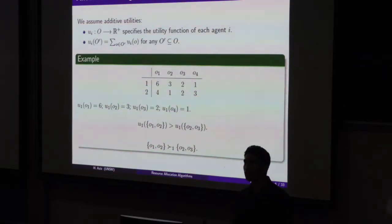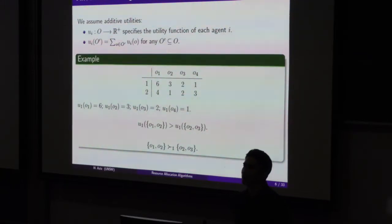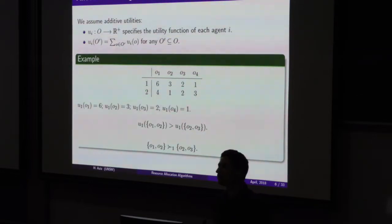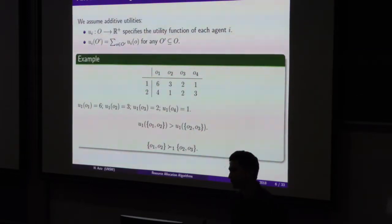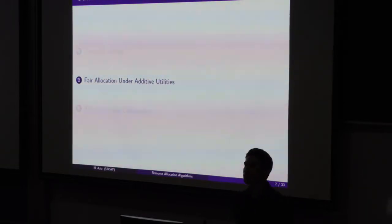All agents want to get as much utility as possible — each would rather have all items. But we want to allocate items in a fairer manner so that everybody thinks it's a reasonable outcome, and we will be after allocations which are fair under additive utilities.